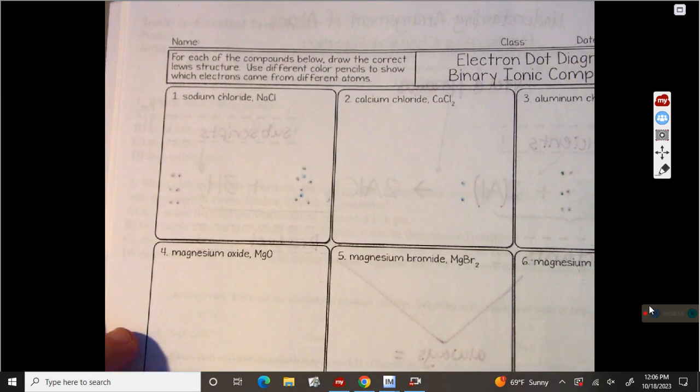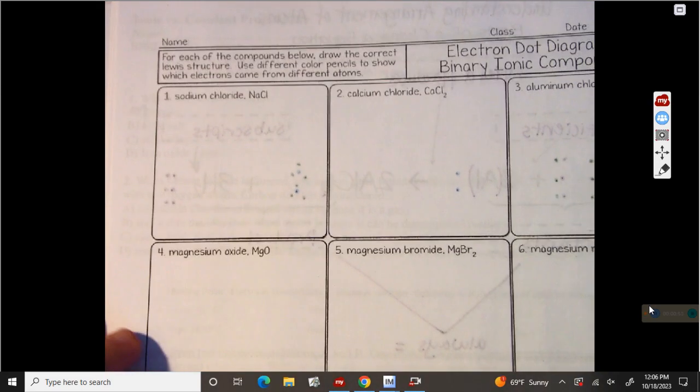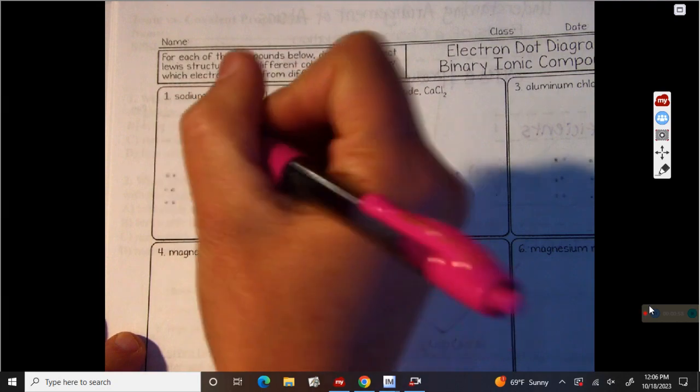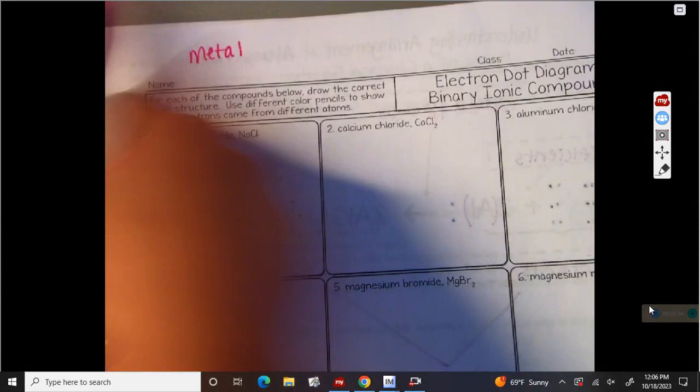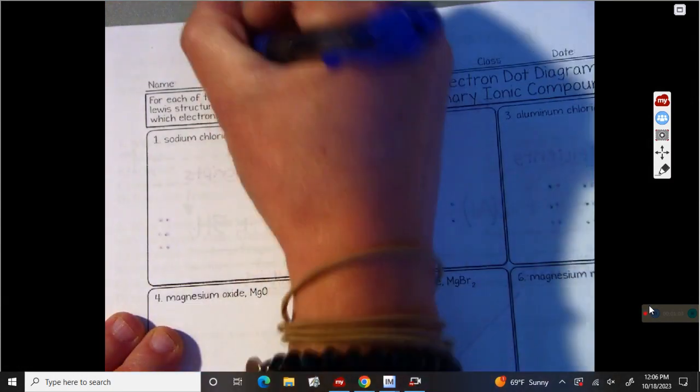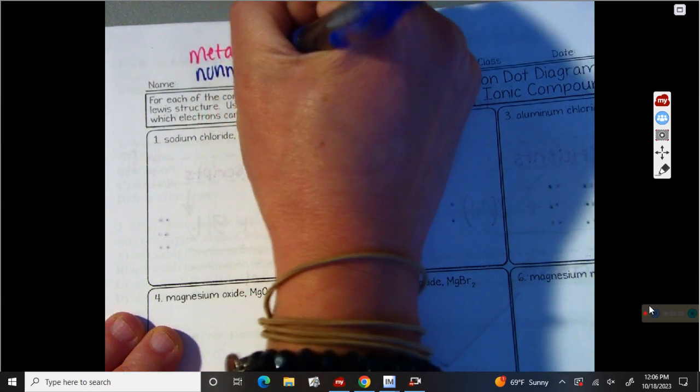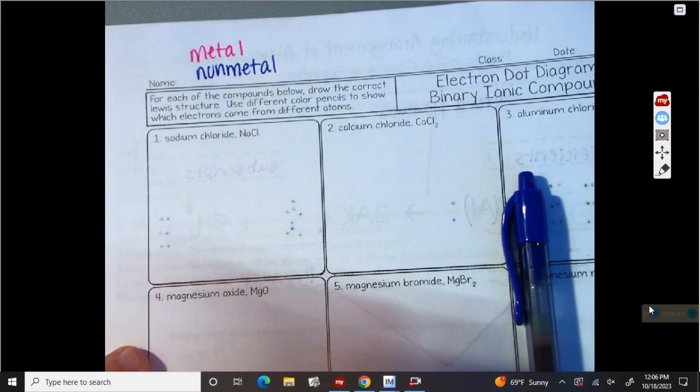You need to do each one of these 12 exactly like I do number one, two, and three. I'm going to use one color for my metal. So up here at the top, I'm going to write the metal is going to be pink. And my non-metal, yours can be red and blue, red and orange, any color you want. And my non-metal is going to be blue.